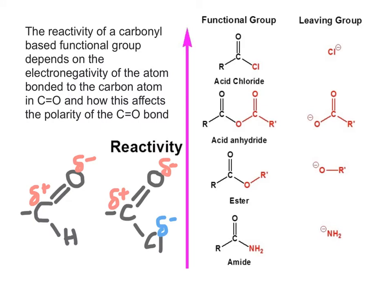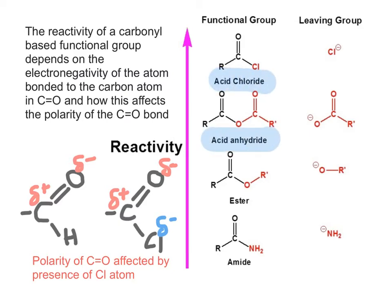Looking at two examples, you've got an aldehyde on the left where the C=O is clearly polar, and an acyl chloride on the right where you also have the polarity of the C–Cl bond. Therefore, the polarity of the C=O on the right-hand functional group is disrupted. These are called acyl chlorides on our specification, so it's worth pointing that out.